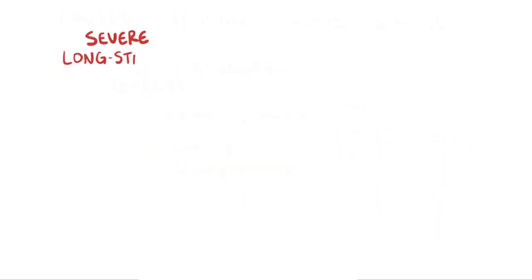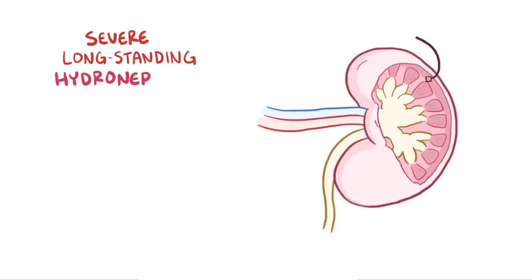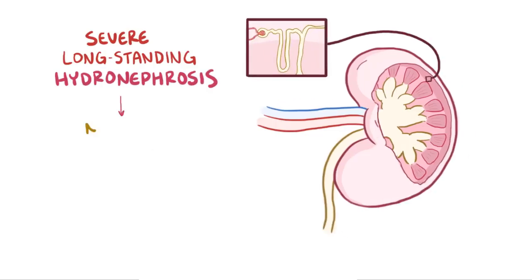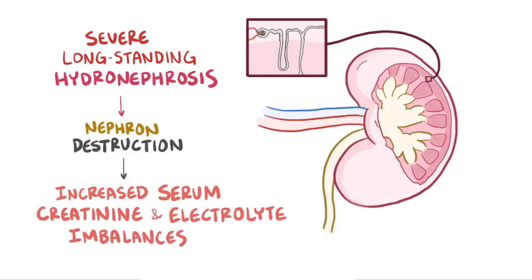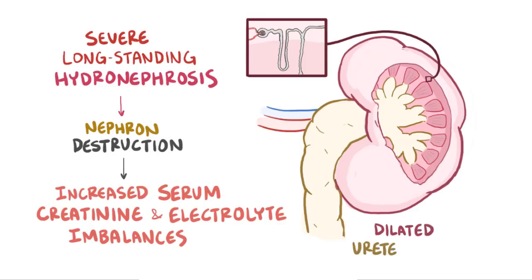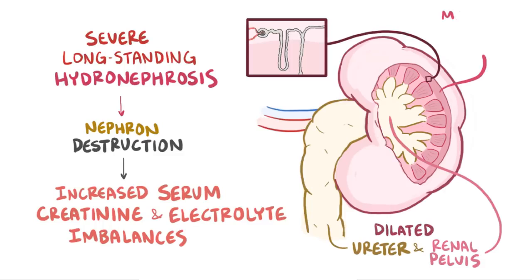Severe, long-standing hydronephrosis can lead to nephron destruction and can result in an increase in serum creatinine, as well as electrolyte imbalances. When this sort of damage has happened, the kidney can develop a dilated ureter and renal pelvis, as well as compression atrophy — which is thinning of the renal medulla and cortex.